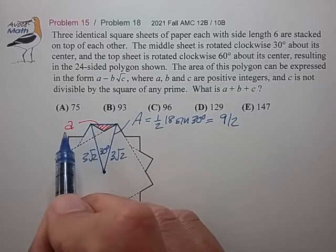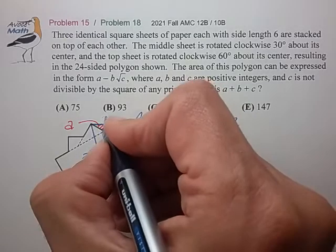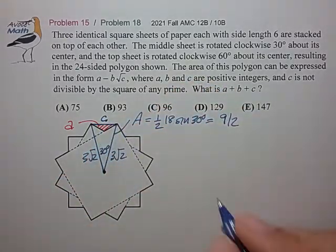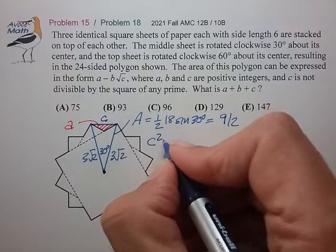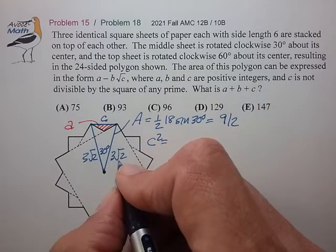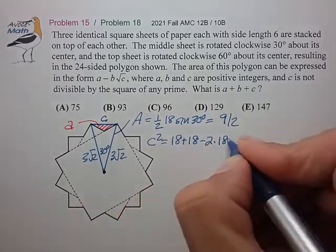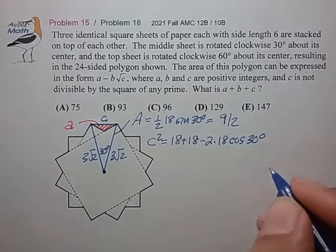To calculate the area of small a, we need to know this side length c. Using the law of cosines, c² equals this squared plus this squared minus 2 times this times this times cosine of 30. Cosine of 30 is √3/2.